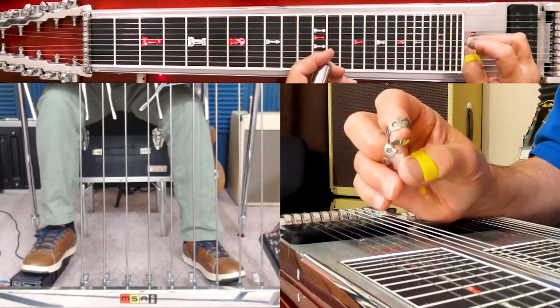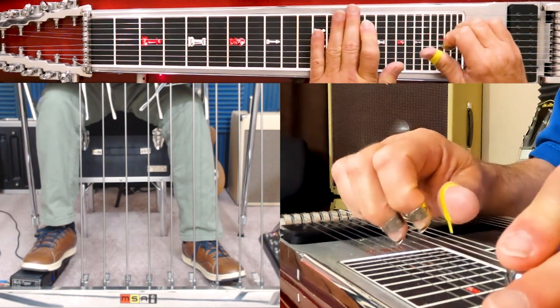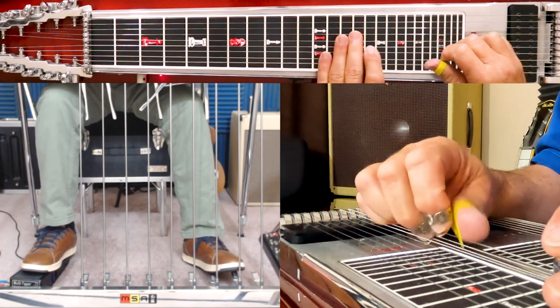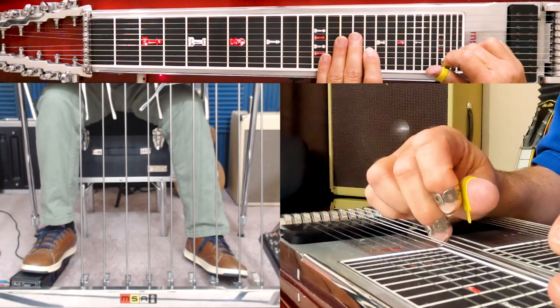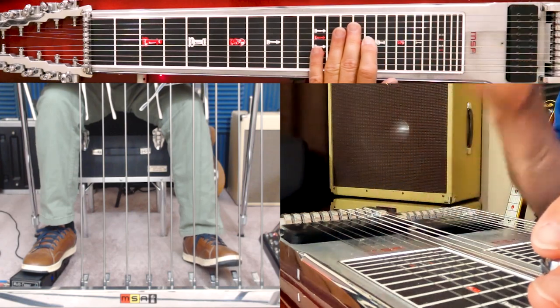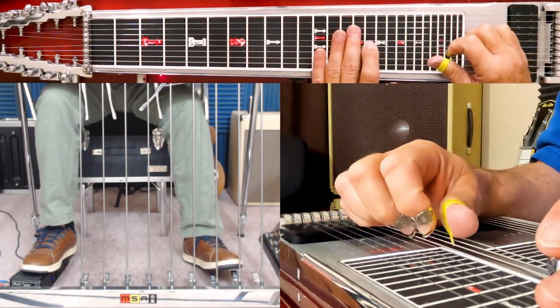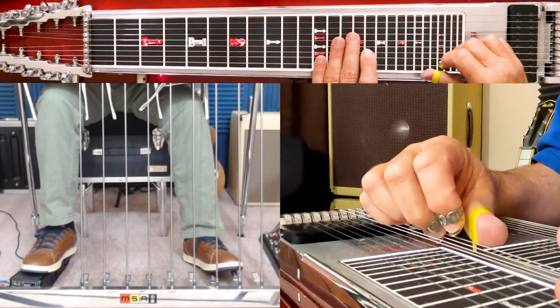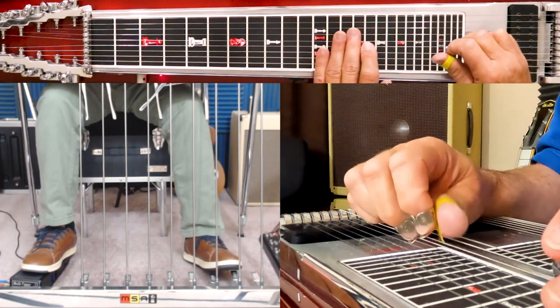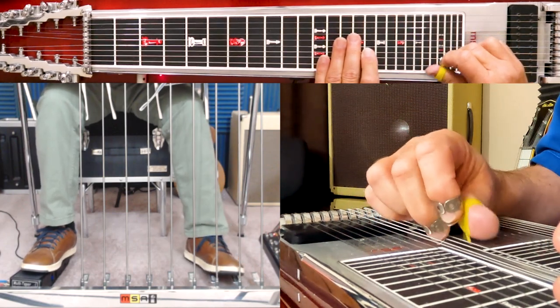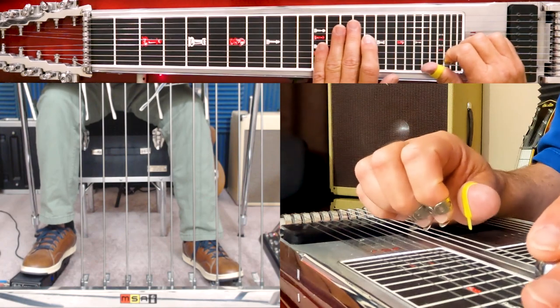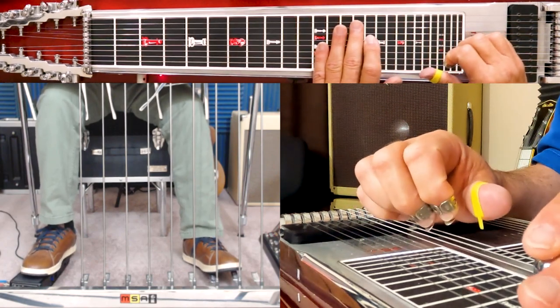The next chord we go to is an A minor. You play at the 15th fret still. The bar doesn't move. You play 7, 8, 9, 10, and then you play 10 with the A pedal down, the one that raises it. So now we've got C, G, A minor.